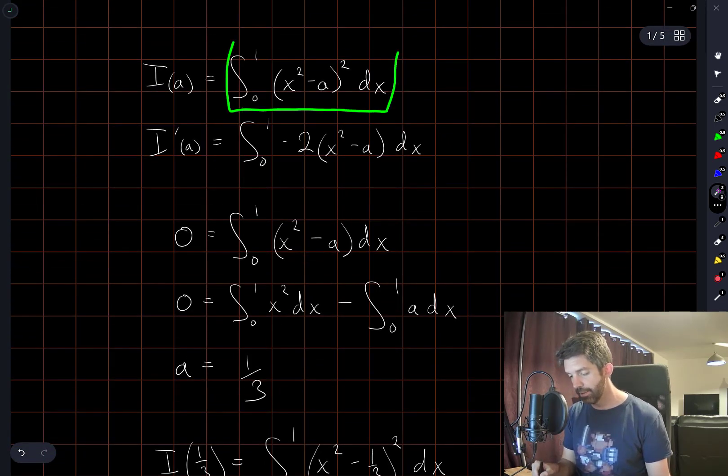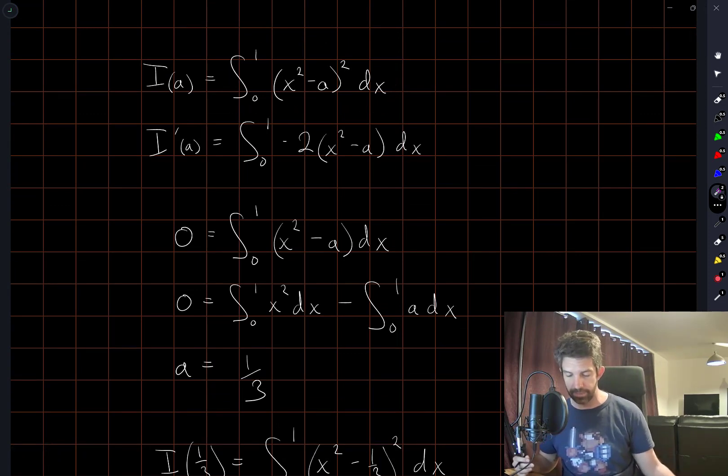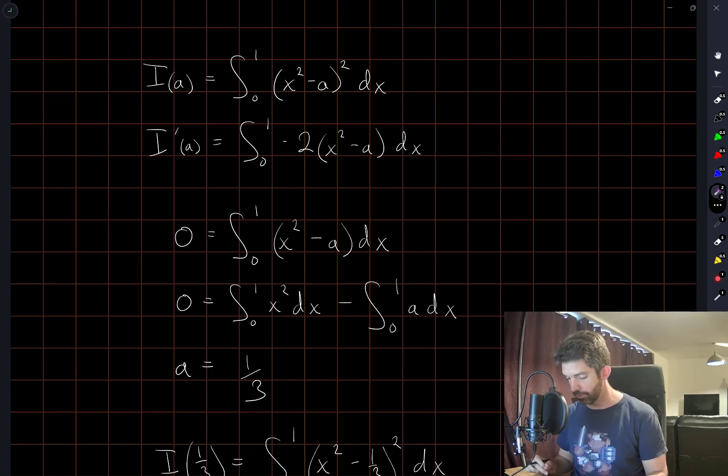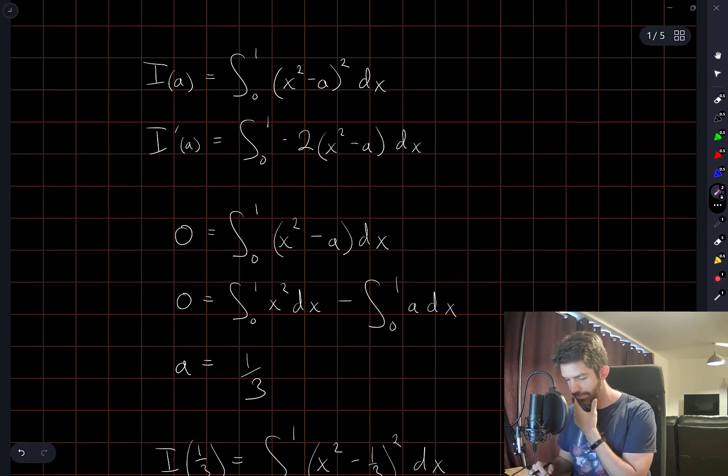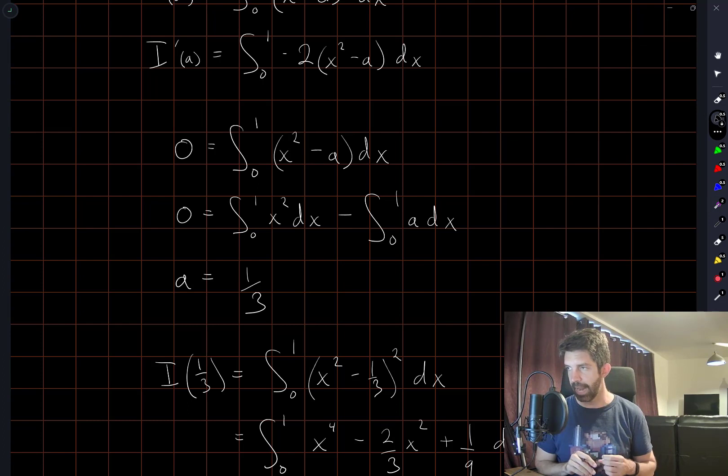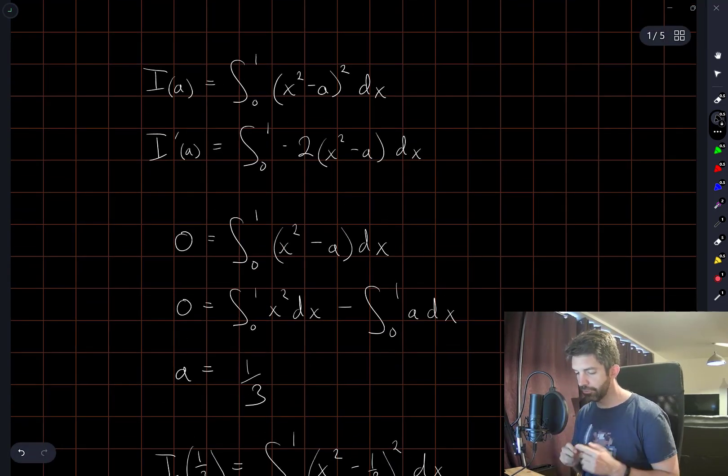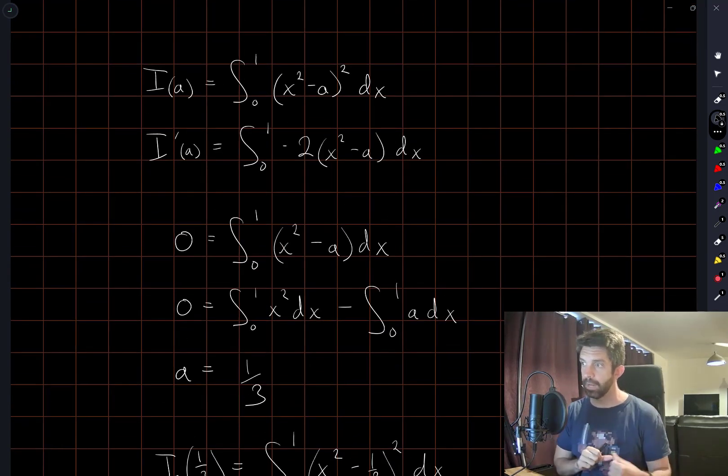But at the end you still have to resubstitute the value of a you find into here and evaluate again. If there's a way of getting around that then maybe this solution is more straightforward but I don't see it right away. So overall I think the two methods are more or less the same level of difficulty and the same number of computations that are needed.